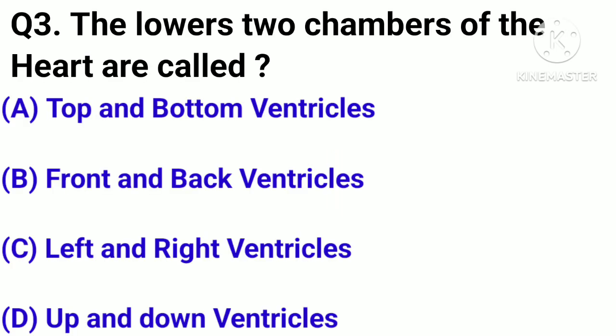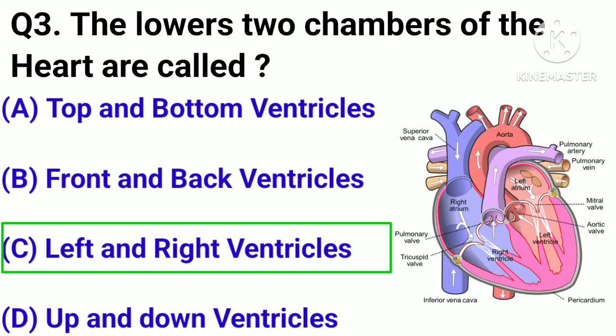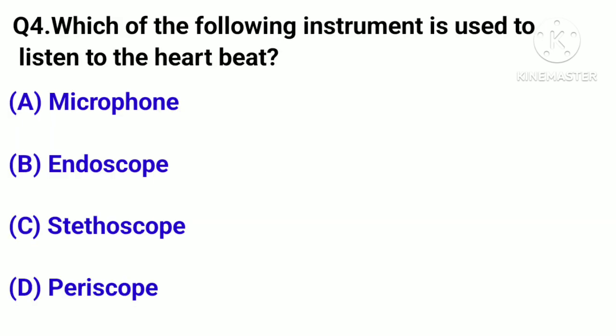Question number 3. The lower 2 chambers of the heart are called? Option A: Top and bottom ventricles. Option B: Front and back ventricle. Option C: Left and right ventricle. Option D: Up and down. Correct answer: Option C.